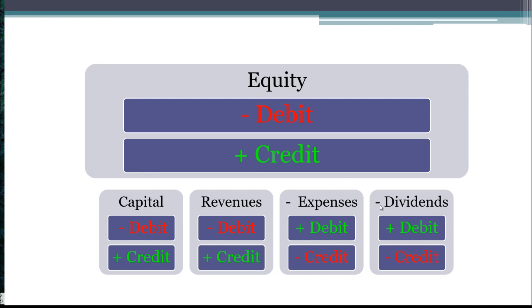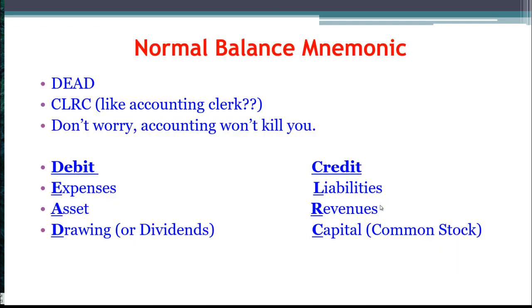That's an important rule to understand — think of expenses and dividends as automatic negatives. There's an easier way to remember this through the normal balance mnemonic: DEAD and CLERC (or CLARK). The debit accounts include expenses, assets, and dividends — those three have normal debit balances and are increased with debits. The three credit accounts — liabilities, revenues, and capital or common stock — are increased by credits.